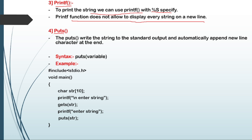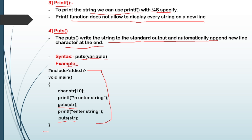The fourth and last function is puts. The puts function writes the string to the standard output and automatically appends a newline character at the end — meaning it automatically adds a new line character at the end. The syntax is: puts(variable_name). Example: gets(str) to input, then puts(str) to display the string with an automatic newline. This is the end of the puts example.